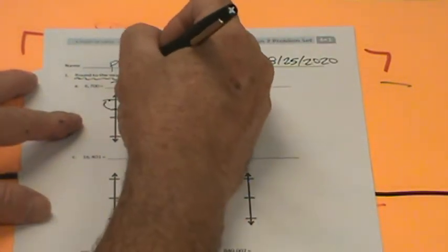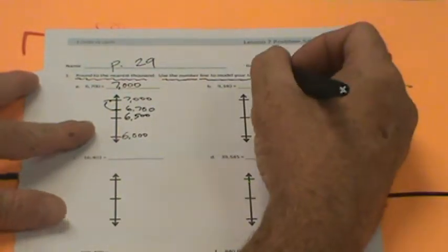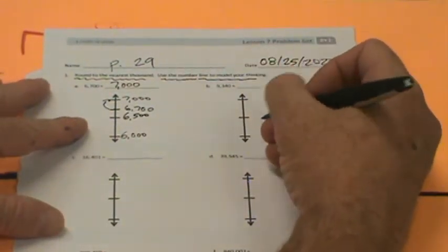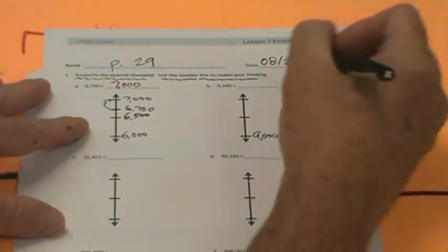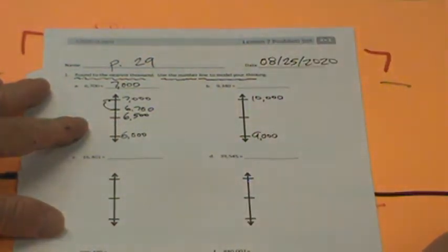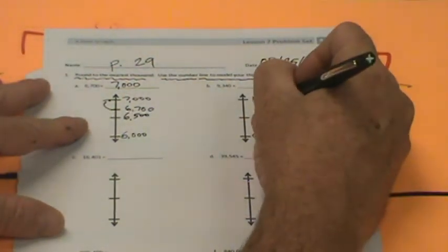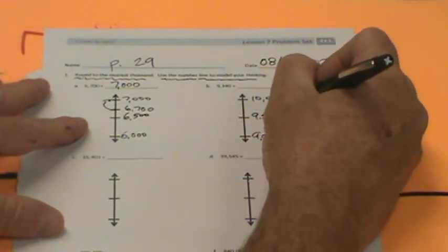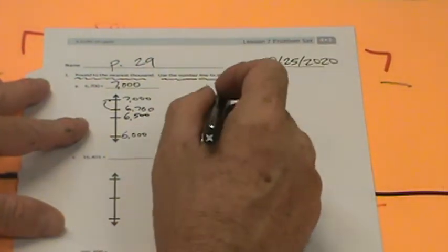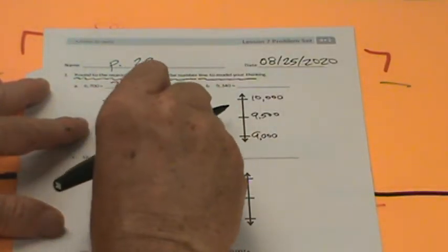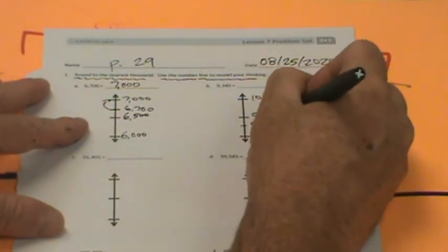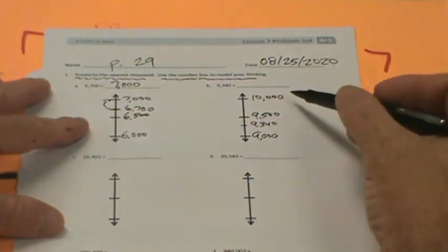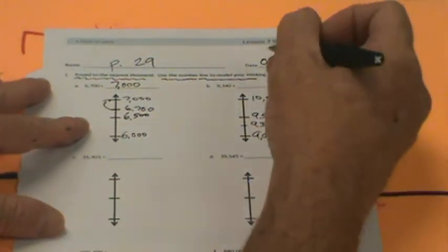Let's go to 9,340. There's 9,000, there's 10,000. What's our midway point? 9,500. Our number is 9,340. Is that greater than 9,500 or less? It's less, so what is it closer to? 9,000. You're absolutely correct.